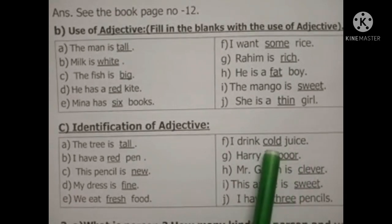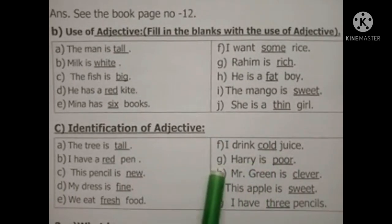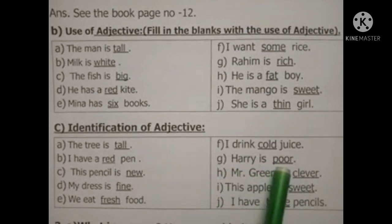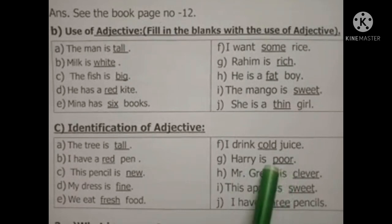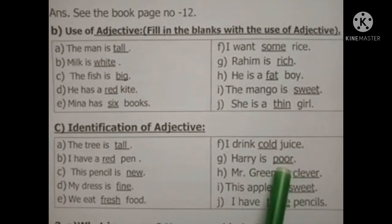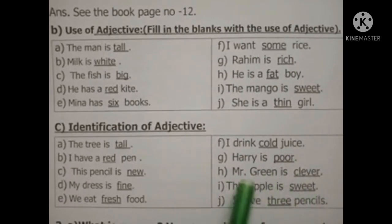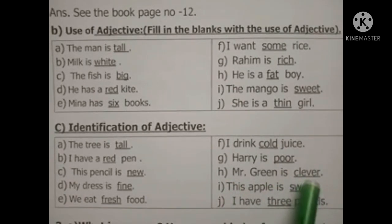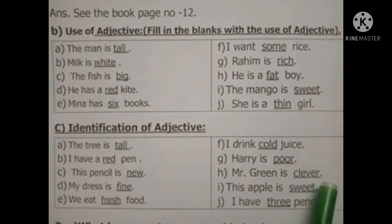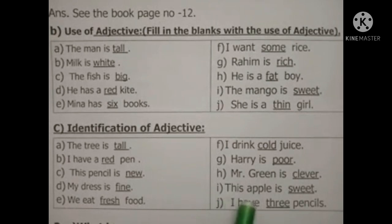Cold — এখানে 'cold' হচ্ছে adjective। (G) নম্বরে: 'Harry is clever' — Harry মানে একজন ব্যক্তি। Harry কেমন? Harry হচ্ছে চালাক। তাহলে চালাকটা হচ্ছে adjective। 'Clever' হচ্ছে adjective। (I) তে কী আছে দেখো: 'This apple is sweet' — এই আপেলটি মিষ্টি। তাহলে 'sweet' মানে মিষ্টি।